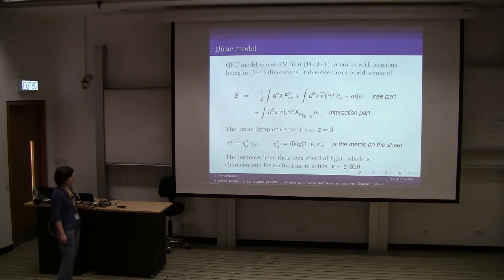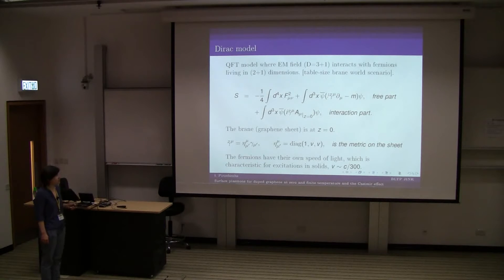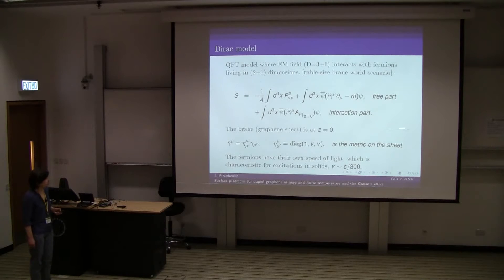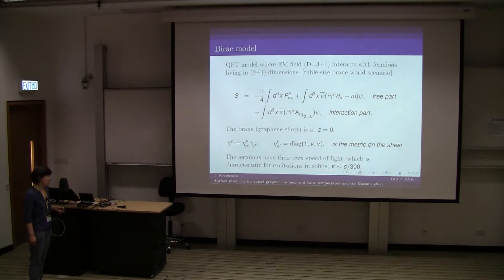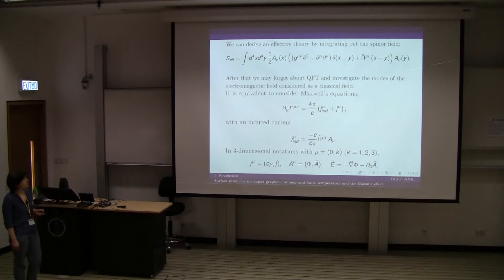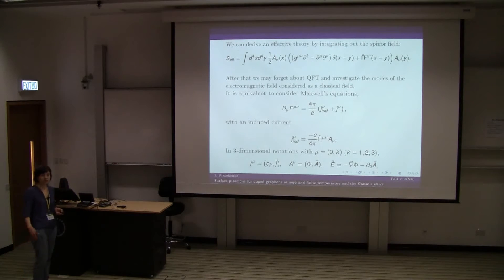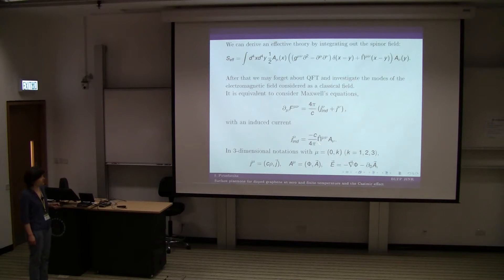This is the well-known action for quantum electrodynamics. The only difference is that we have integrals over three space-time dimensions, showing that the fermions are living on the plane of graphene. This is the free part and the interaction part. Here we use gamma matrices multiplied by a metric tensor where the velocity of light inside graphene enters — this is 300 times less than the speed of light in vacuum. We can integrate out the fermions and have this effective action.